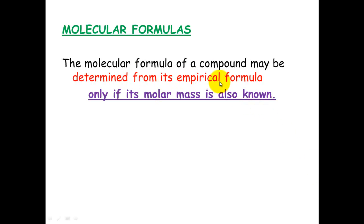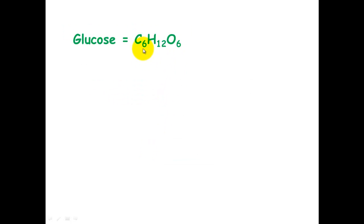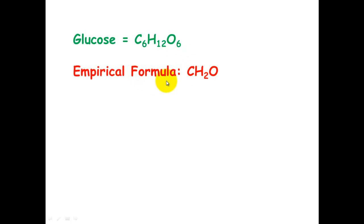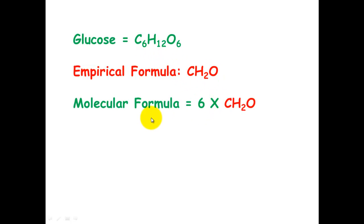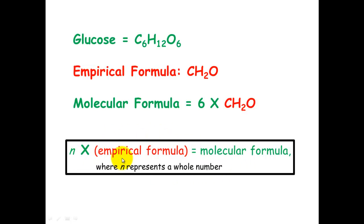The molecular formula can be determined from the empirical formula, but only if the molar mass is also known. We use the relationship: molecular formula = whole number × empirical formula. For glucose, the molecular formula C6H12O6 divided by 6 gives the empirical formula CH2O, so going back the other way, the molecular formula equals the empirical formula multiplied by the whole number 6.